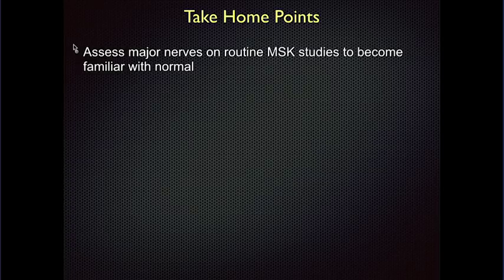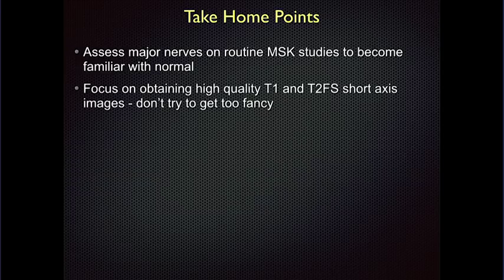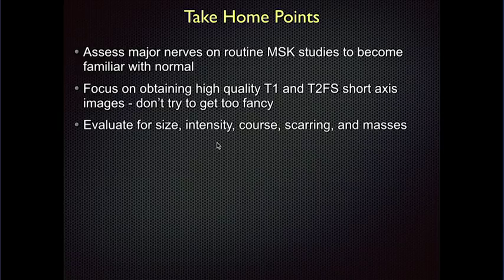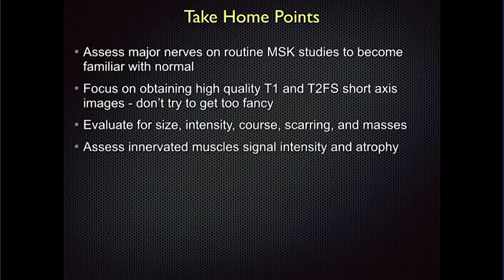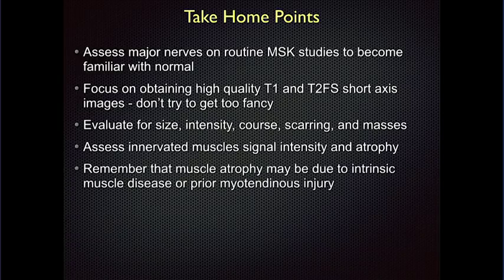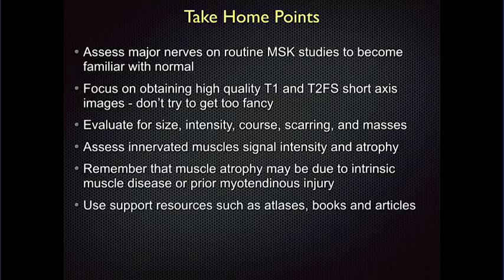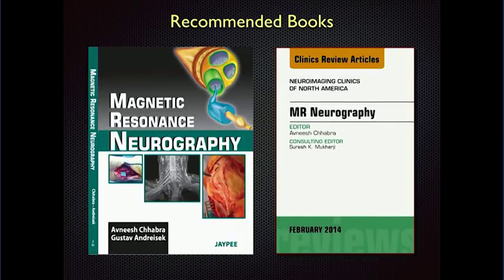Some take-home points: assess nerves on routine exams — as you read hip, knee, and ankle studies, try to look at the nerves to get a good baseline for what's normal. For nerve imaging, the key is high-quality T1 and fat-suppressed T2 images. Some 3D sequences are very helpful, especially combined fat-water and water-only images. Take a look at size, intensity, course, scarring, and masses. Then look downstream for abnormal signal within expected muscles. But remember there are other causes like muscle disease or myotendinous injury. There are atlases, books, and articles — there's a book by Chhabra and clinics articles by Avneesh Chhabra and others that are fairly up-to-date. Hopefully I've convinced you that you can actually see nerve abnormalities.